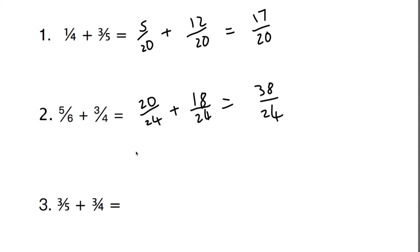And lastly, number three, we could do the same trick again, five times four is twenty, so if I was going to multiply this by four, both the top and bottom, I would have twelve twentieths, and then multiply this by five, it would be fifteen twentieths. Now we can add them together, the answer is twenty-seven twentieths.